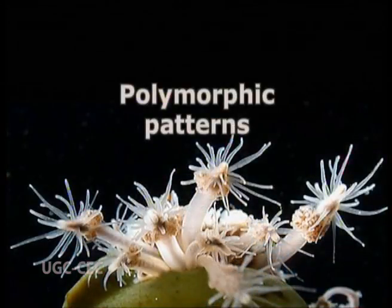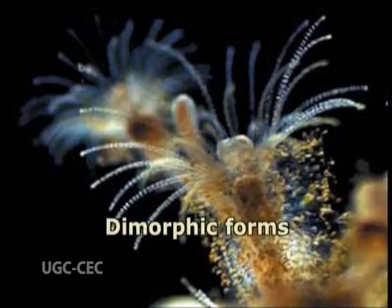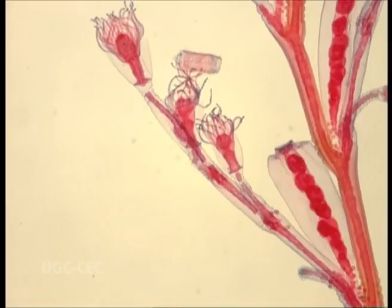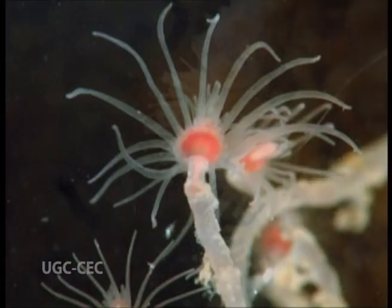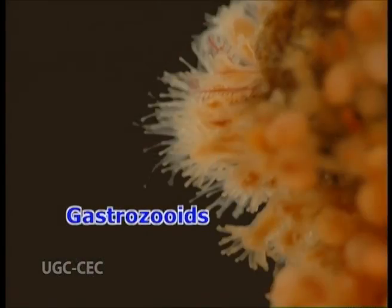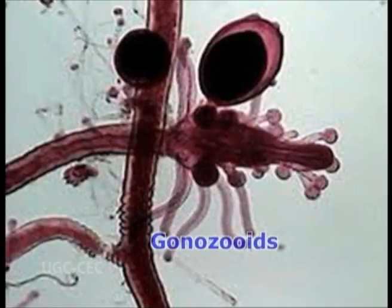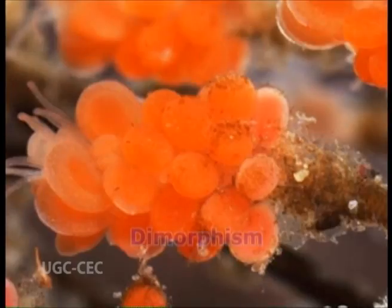Polymorphic patterns. In hydrozoans, a variety in degree of polymorphism is observed. First, dimorphic forms. This is the simple form which is observed in many hydrozoans like Obelia, Tubularia, etc. They have only two types of zooids: gastrozoids or hydranths related to nutrition, and gonozooids or blastostyles related to reproduction. This phenomenon is termed as dimorphism.